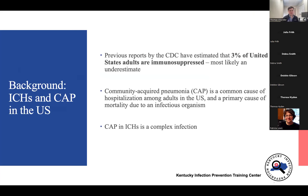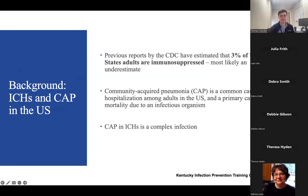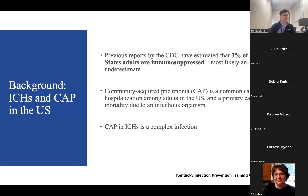A little background on this topic: the CDC has estimated that 3% of adults are immunocompromised in the United States. This estimate is likely an underestimate due to recent medical treatments using biologics for a variety of diseases, as well as increased survival in patients with transplantation, neoplastic disease, and improved survival among patients with HIV. Community-acquired pneumonia is a common cause of hospitalization in adults in the United States and is the primary cause of mortality due to an infectious organism.